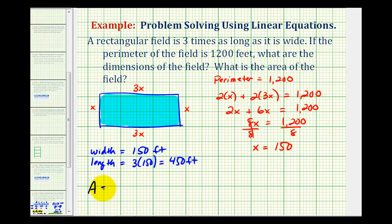The area of a rectangle is equal to the length times the width. So in this case we'd have 450 feet times 150 feet.